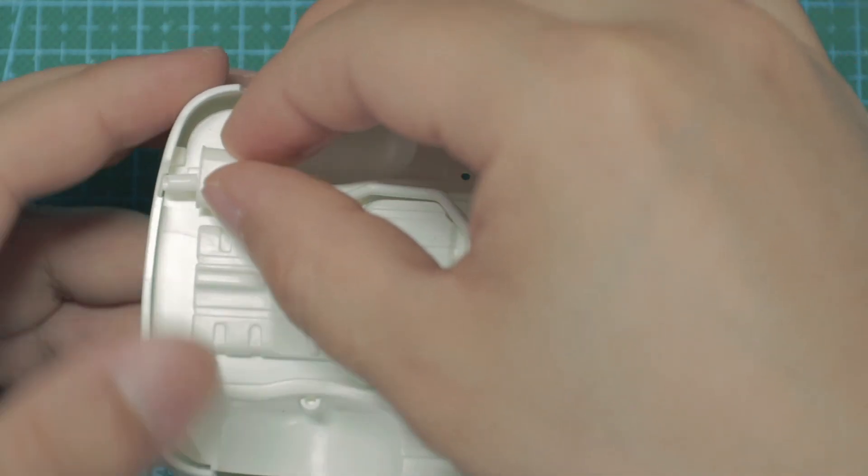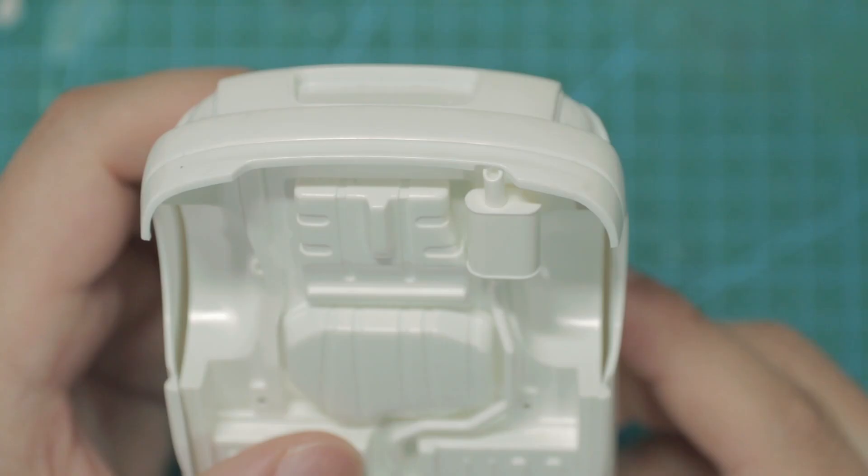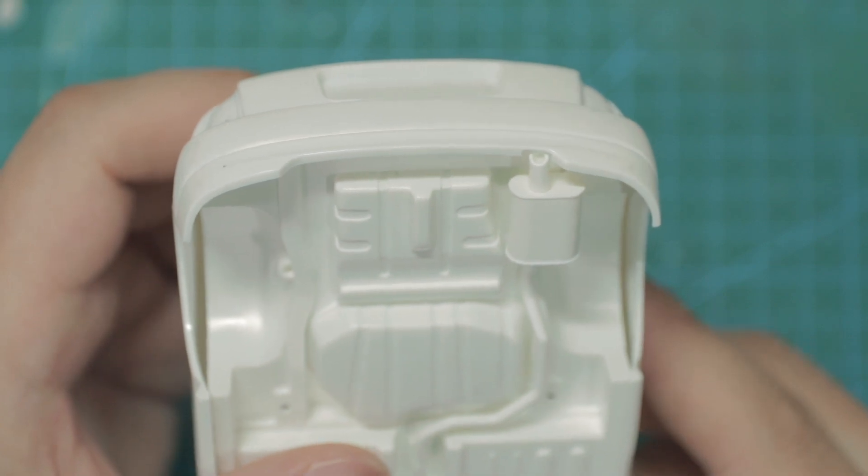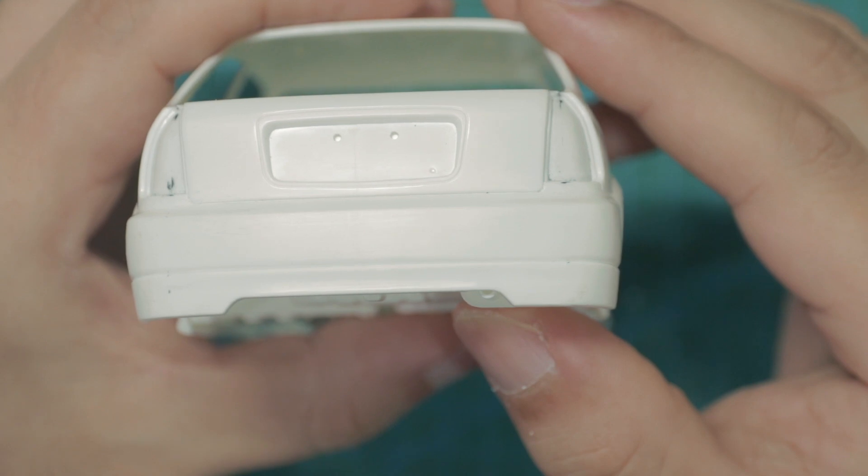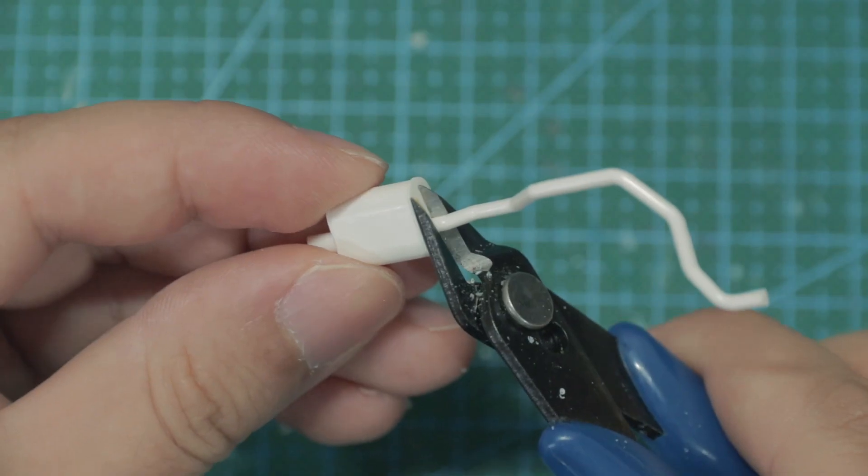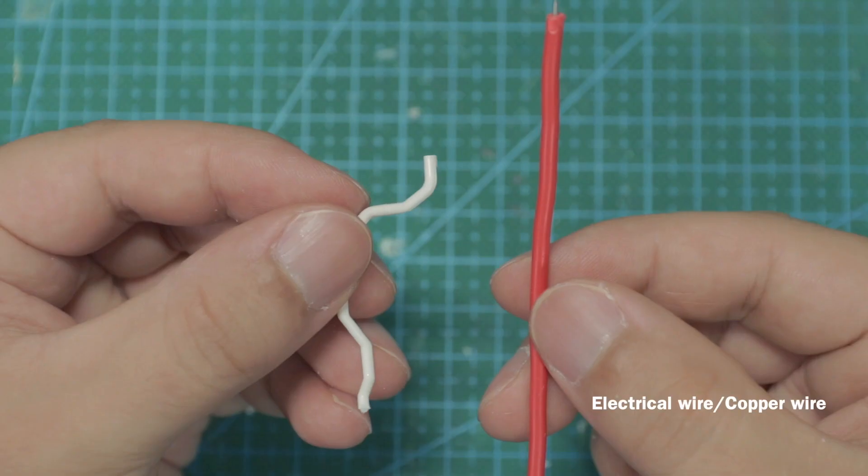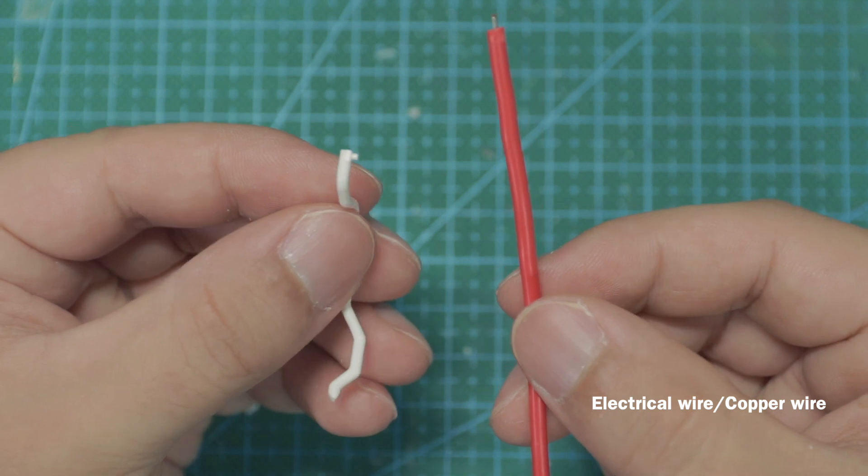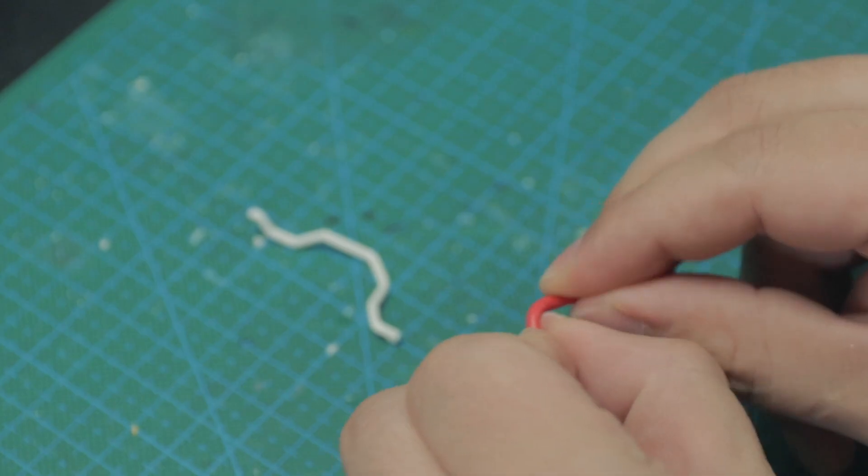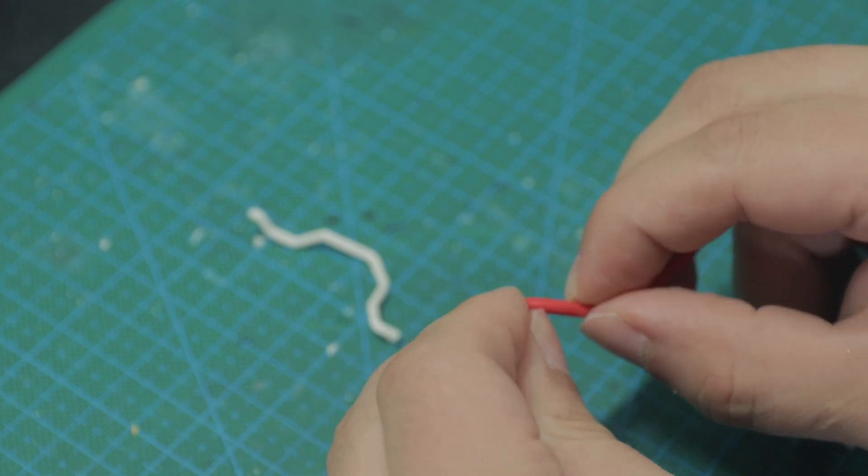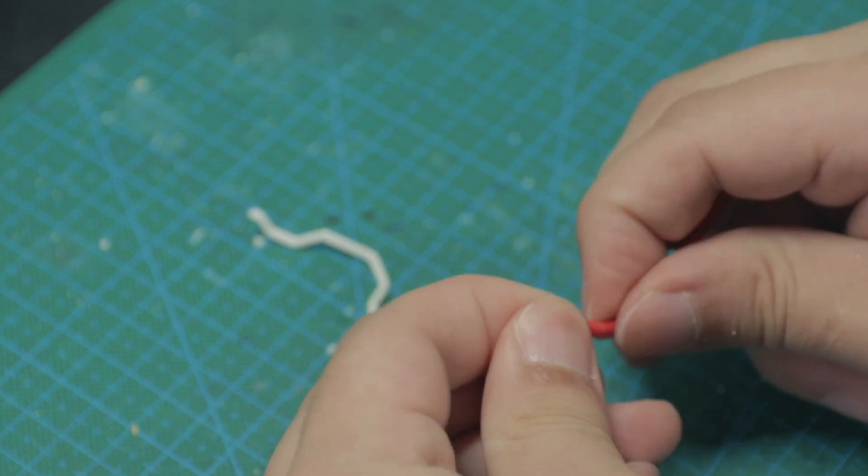I am planning on using the stock exhaust, but I noticed that the tip of the muffler is being covered by the rear bumper. So I have to reposition the muffler by making a new exhaust pipe using electrical and copper wires. By the way, I have a tutorial on how to make custom exhaust for scale model cars, and I will link it here if you want to check it out.